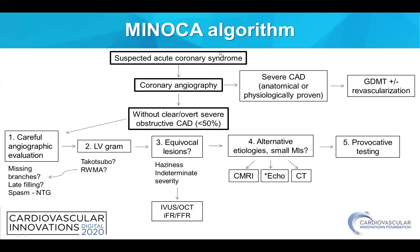How do we evaluate patients with MINOCA? This is the proposed MINOCA algorithm. If a patient has suspected acute coronary syndrome and undergoes coronary angiography, the first step is to exclude severe coronary artery disease that is anatomically severe or physiologically proven to be flow-limited — those patients would be treated following usual guidelines. But for patients with concern for acute myocardial infarction in whom coronary angiography does not demonstrate obstructive coronary disease, the following steps must be considered.